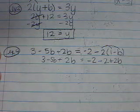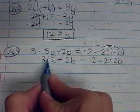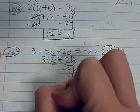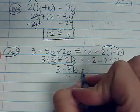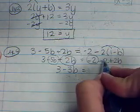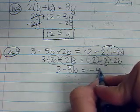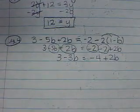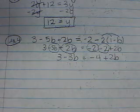The next thing I want to do after distributing is to combine my like terms. On this side, I have negative 5b and 2b for a total of negative 3b, and I bring down the 3. On this side, I combine my negative 2 and my negative 2 for negative 4 plus 2b. And my equation is starting to look a lot better.